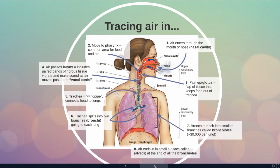So we've got a lot of surface area in those lungs. The air is then going to end in small sacs called alveoli that are found at the end of each bronchiole. They look like little clusters of grapes that expand as your lungs fill with air, and we'll look at those in a little more detail in just a minute.